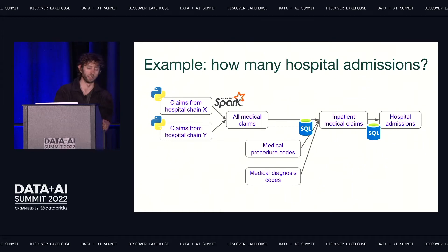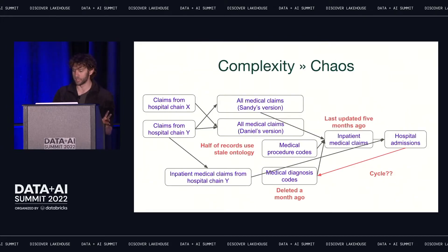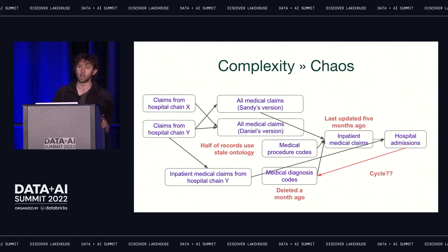Here's a little example from my past life working with health insurance data. We wanted to answer a simple question: how many people were admitted to the hospital during this time period? We ended up with a chain of seven intermediate datasets that spanned three compute frameworks. Maintaining intermediate datasets lets us reuse valuable data cleaning work. Supporting multiple ways of processing data gives us flexibility to use the right tool for the job. But without extremely careful shepherding, this complexity naturally devolves into chaos. We ended up with multiple versions of the same datasets created by different people or at different times.